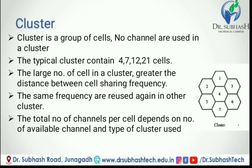The same frequencies are used again in other clusters. The total number of channels for a cell depends on the number of channels and the type of cluster used. In the figure, we can see the cluster which contains 7 cells. Another concept in cluster is frequency reuse. A small number of radio channel frequencies are available in mobile systems, so the need to reuse radio channels to carry more than one conversation at a time is essential. The concept of frequency reuse is assigning to each cell a group of radio channels used within a small area. Cells are assigned channels different from neighboring cells, and the same group of channels is used in different cells that are far enough from each other so that their frequencies do not interfere.